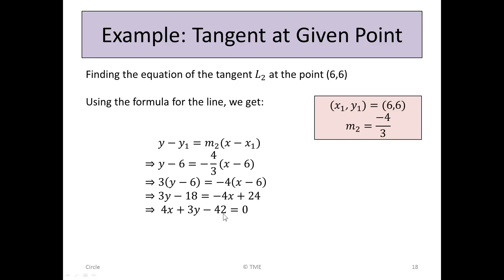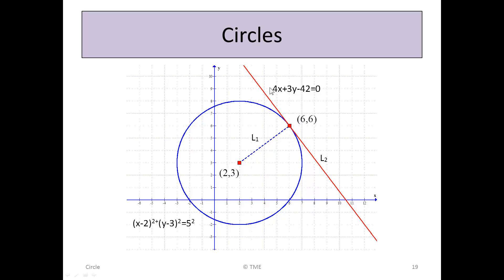So the equation of the line, the equation of the tangent at the point (6, 6), is given by 4x + 3y - 42 = 0. And that's it shown there. 4x + 3y - 42 = 0. We have found the equation of L₂, the tangent at point (6, 6), to the circle.